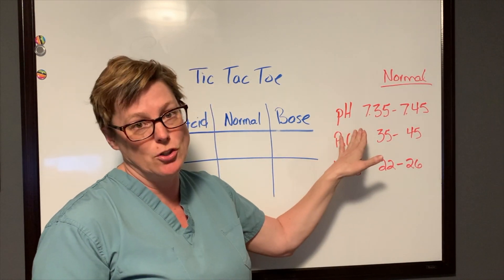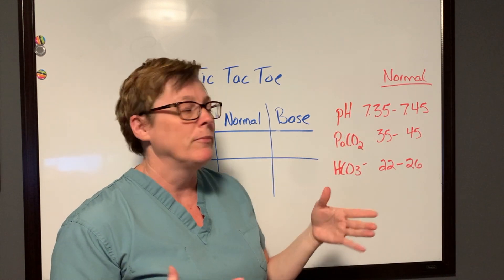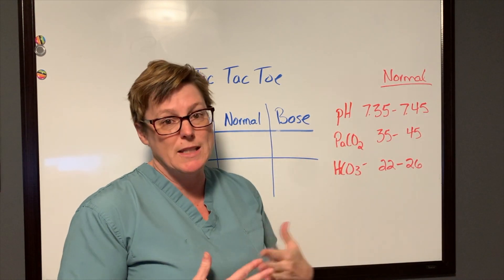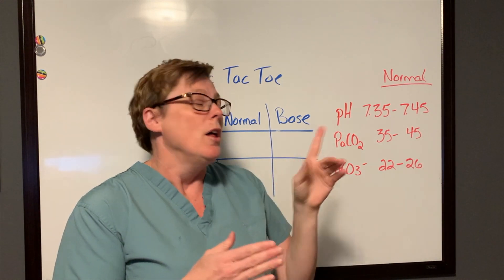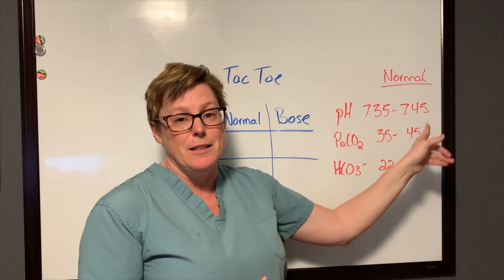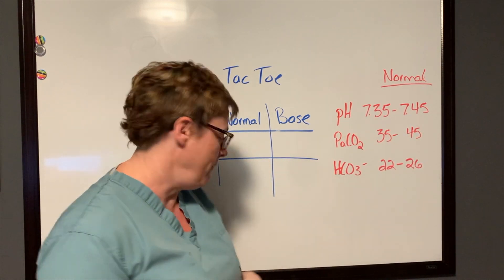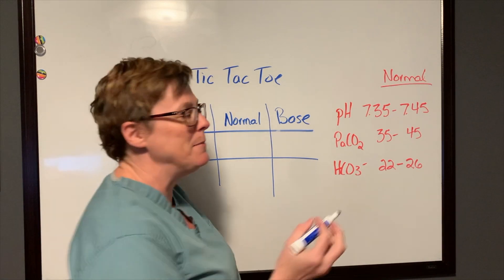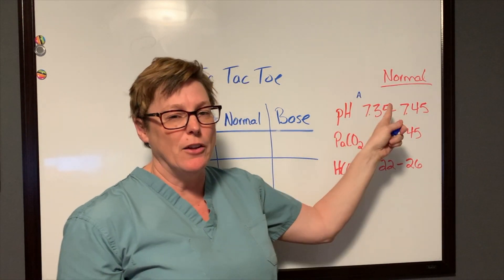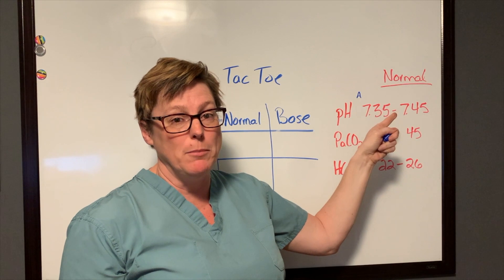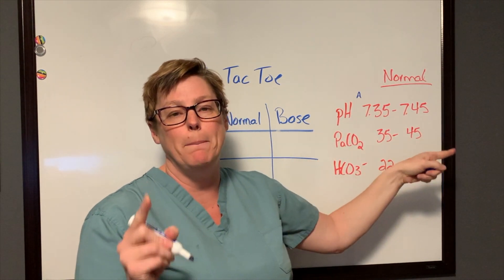The first thing is pH — the overall acidity of the blood. The normal range is between 7.35 and 7.45. The acid is on the lower end, so if we get lower than 7.35 it becomes acidotic — I'm just going to put a little 'A' on this side to remind me. And if we get higher than 7.45 we call it basic.